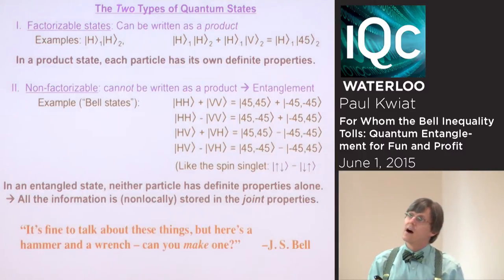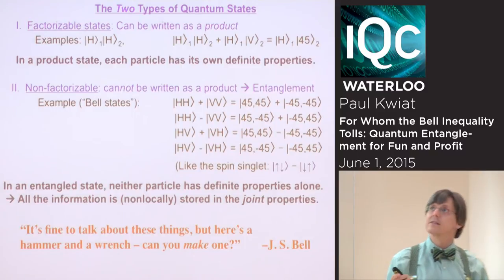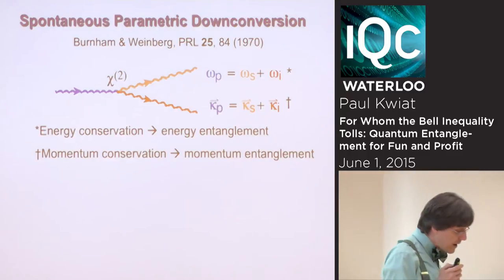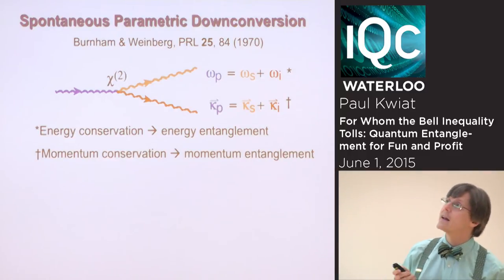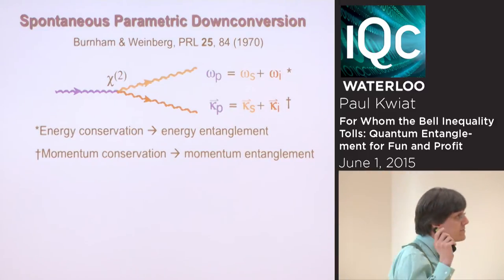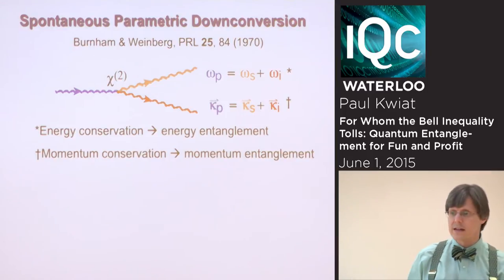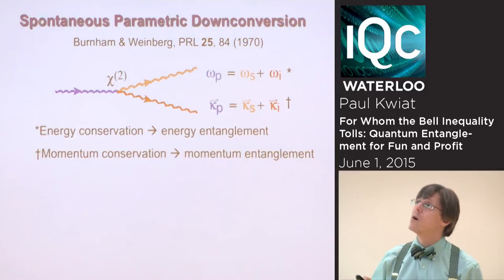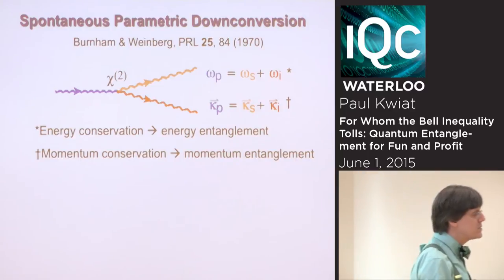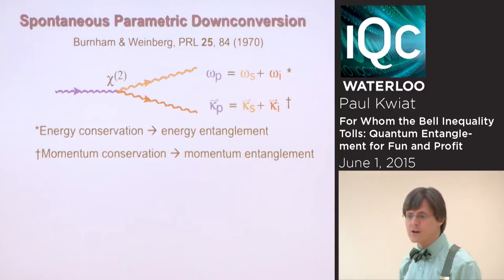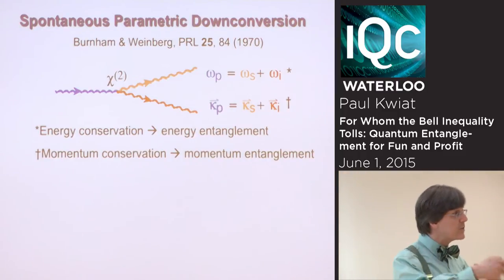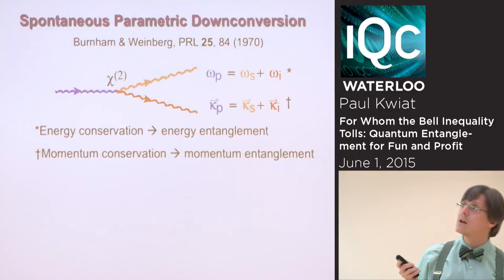How do we actually make these entangled states? In our case, we use parametric down conversion. I have a non-linear crystal and send in high-energy photons, which occasionally split into daughter photons — only 1 out of 10 billion times. We must satisfy energy conservation and momentum conservation, and that already leads to entanglement in those degrees of freedom. We've also done experiments using so-called hyperentanglement, where photons are entangled in every possible degree of freedom.